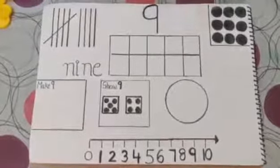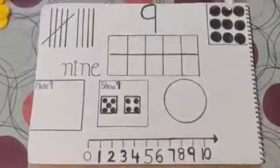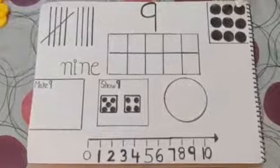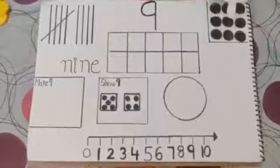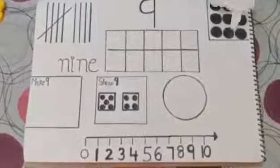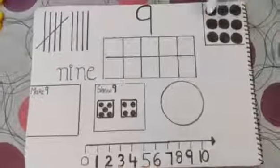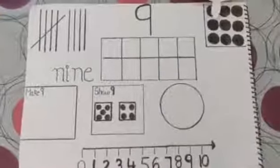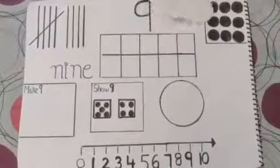Let's count the dots. One, two, three, four, five, six, seven, eight, nine. Nine dots. This is a ten frame.